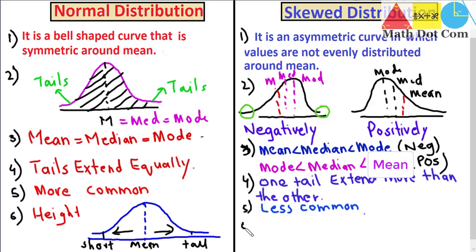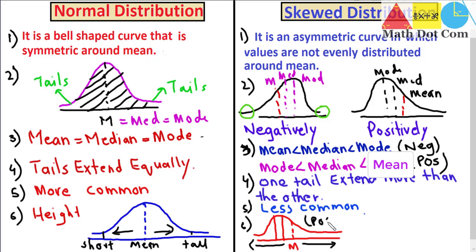For skewed distributions, an example of positively skewed distribution is income in a population. In a positively skewed distribution, mean is to the right with median and then mode. There are very few people with very high income — like executives — while more people have average or lower income. So income in a population is not normally distributed; it is positively skewed.